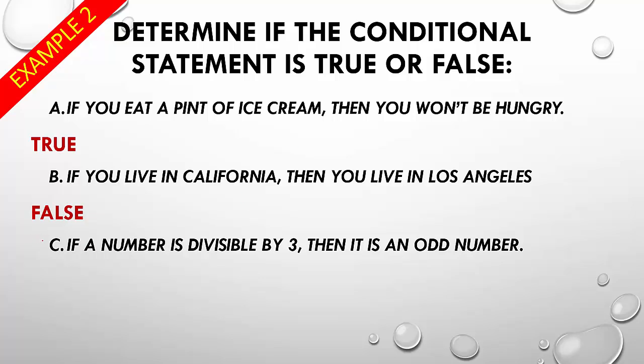So, if a number, now this one's a little bit trickier. Again, you have to kind of like think. If a number is divisible by 3, then it is an odd number. Well, 9 is divisible by 3, right? That equals 3. That's an odd number. But, 6 is also divisible by 3. 6 is an even number. So, that one would also be false.